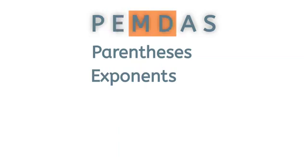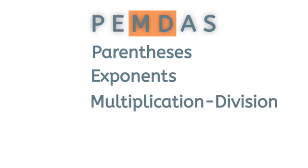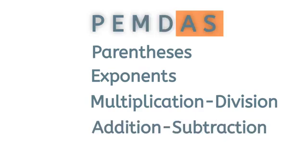M and D are multiplication and division. These operations have the same priority and should be executed from left to right. A and S are addition and subtraction. Finally, perform addition and subtraction from left to right. These operations also have the same priority and should be executed in the order they appear in the expression.